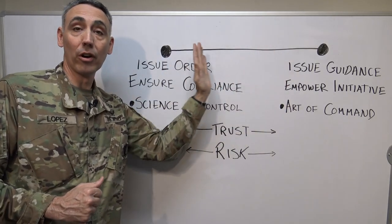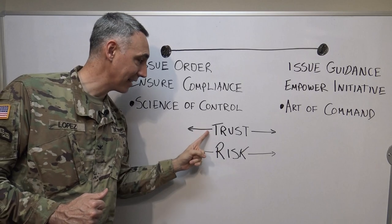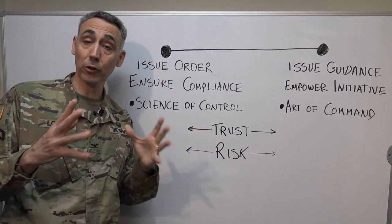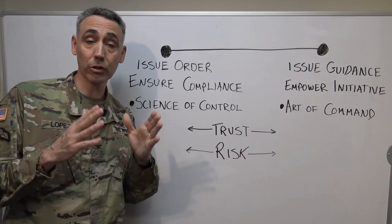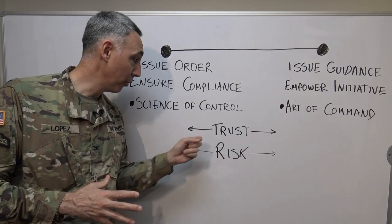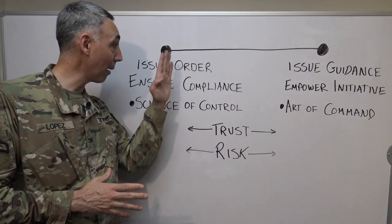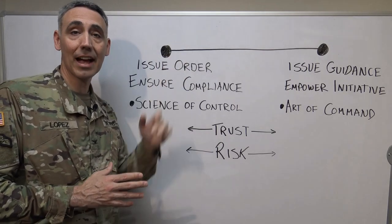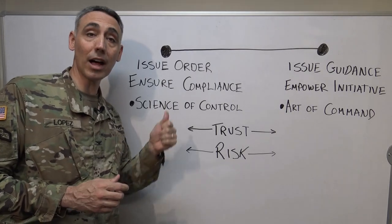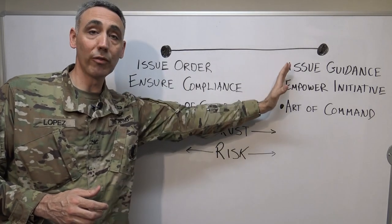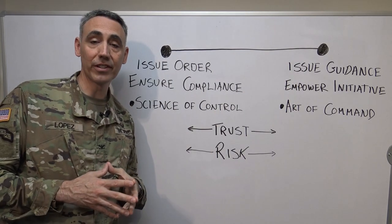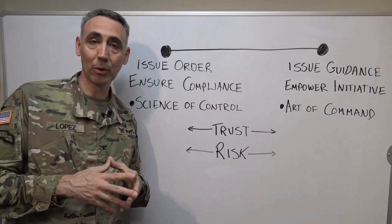As leaders we're not always on one fixed point — we're going to move across this spectrum based on trust and risk. For example, if you're a squad leader and you get a brand new team leader you don't know and haven't built trust with, you'll probably start on the control side of the spectrum until trust goes up and you can move toward issuing guidance and empowering initiative.